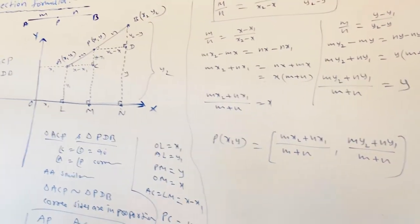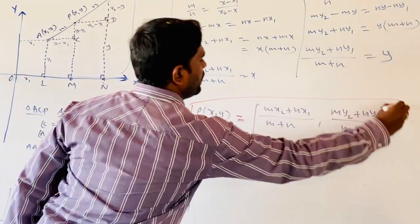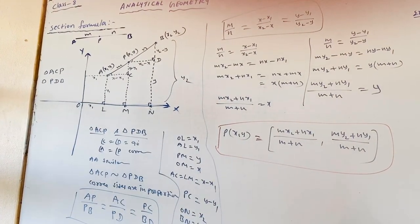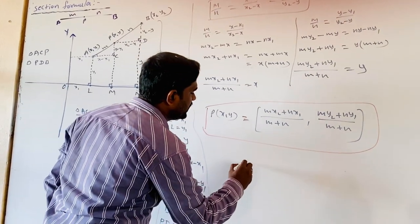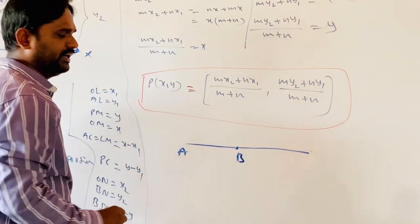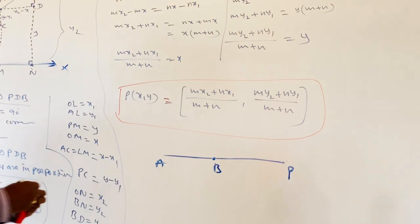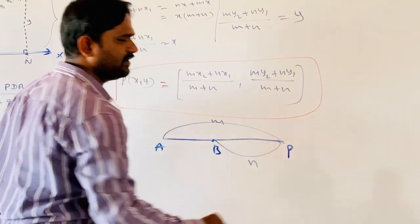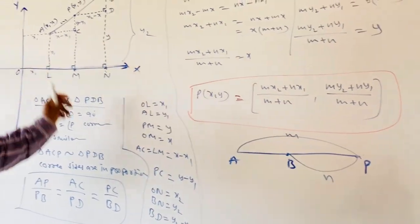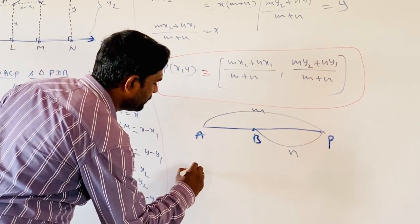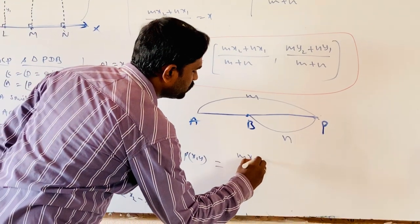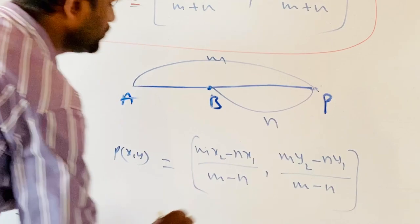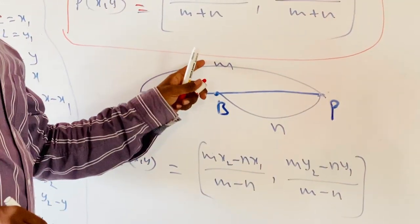Here P is dividing AB internally in the ratio M is to N. Similarly, we can find the coordinates of P which divides externally. If P is exterior to the line segment AB, taking AP as M and BP as N, by using the same approach we can prove that the external section formula gives P(X, Y) equals MX2 minus NX1 by M minus N, comma MY2 minus NY1 by M minus N.